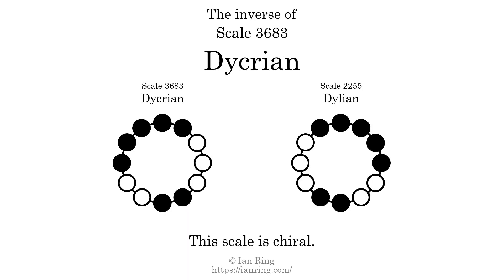The inverse of a scale is a mirror image. It is what you get when the sequence of intervals is reversed. The inverse of this scale is scale 2255, also known as Dalian. This scale is chiral — it cannot transform into its inverse by rotational transformation.